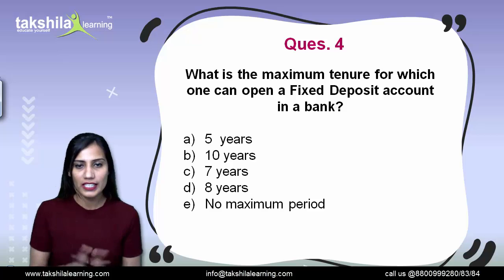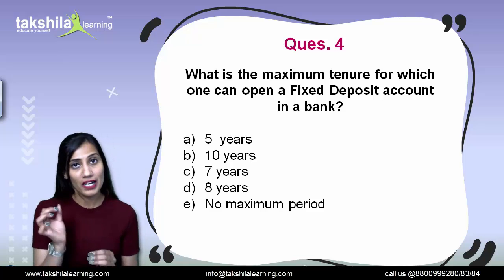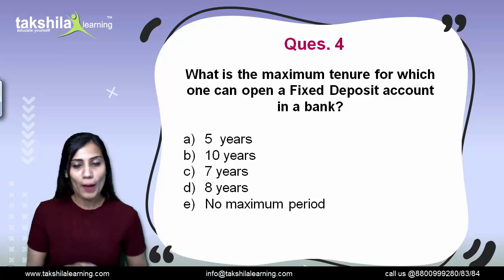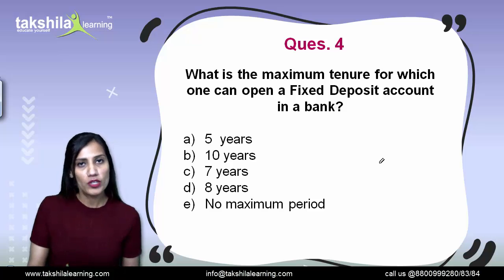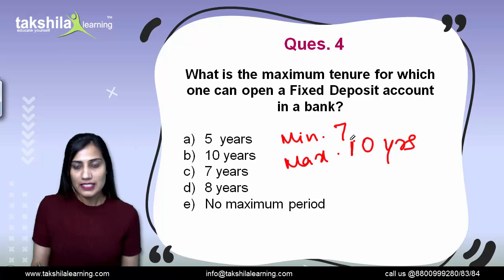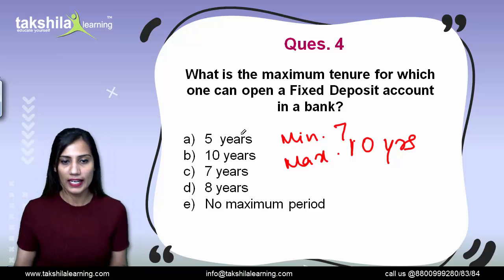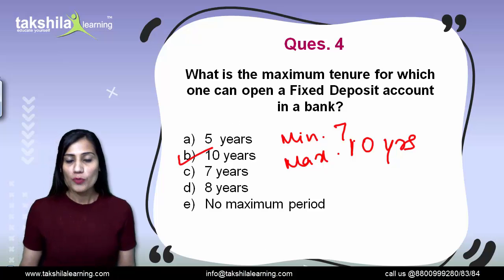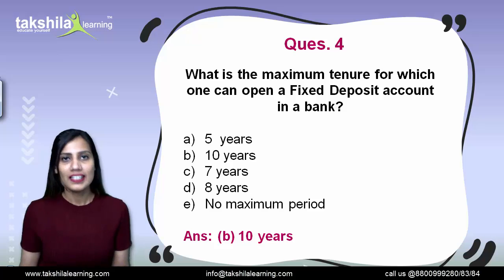Next question is about fixed deposits — what is the maximum tenure of a fixed deposit? Both minimum and maximum values are important to know. The maximum tenure for any fixed deposit is 10 years; you cannot keep a fixed deposit for more than 10 years. So for question number 4, the correct answer is option B, that is 10 years. The minimum tenure is 7 days — no fixed deposit can be made for less than 7 days.